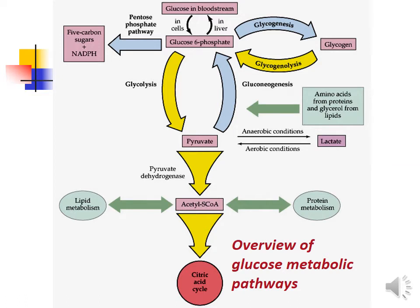Power view of glucose metabolic pathways. Glucose metabolism either starts from glucose or ends in glucose. Glucose from the bloodstream enters the cells and is immediately converted to glucose-6-phosphate. Glucose-6-phosphate is a metabolic junction metabolite of glucose metabolism.